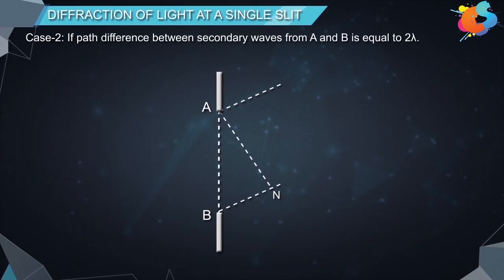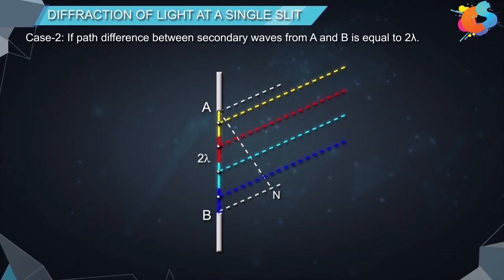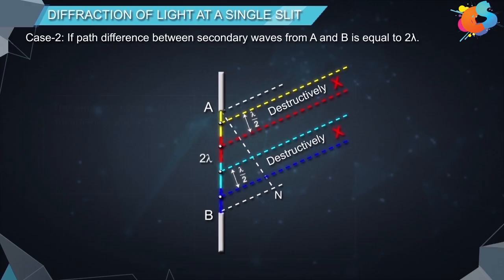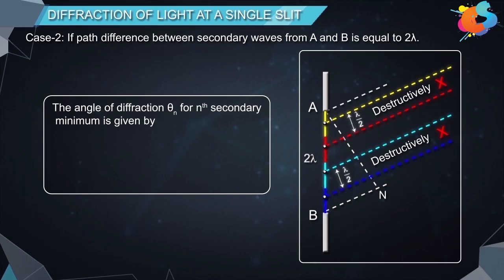If the path difference between secondary waves from A and B is equal to two lambda, the wavefront AB can be divided into four equal parts. Every point in one part will have a corresponding point in its adjacent part for which the path difference is lambda by 2, so all these waves interfere destructively. In general, the angle of diffraction theta_n for the nth secondary minimum is given by a sin theta_n equals n lambda, where n equals 1, 2, 3, 4, and so on.